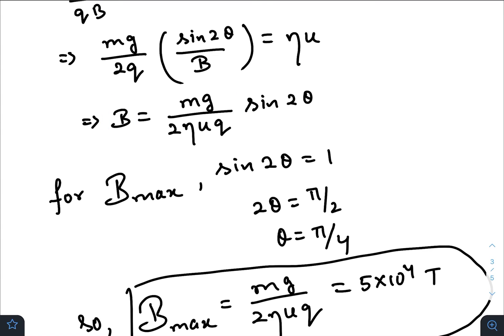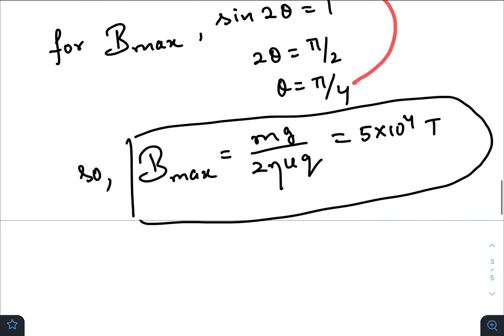And we need to find out the maximum value of B. So for maximum value of B, sine 2 theta must be 1, theta must be pi by 4. Just plug this value here, you will get the maximum value of magnetic field for the situation that has been mentioned in the question.